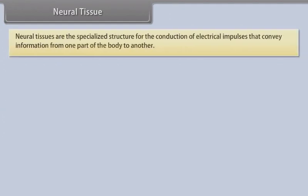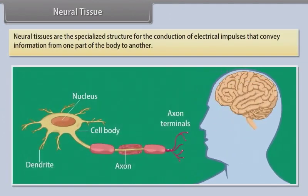Neural tissues are specialized structures for the conduction of electrical impulses that convey information from one part of the body to another.